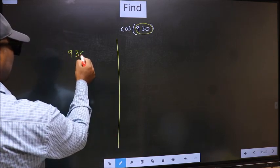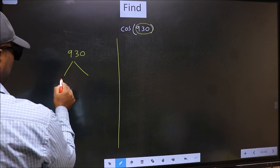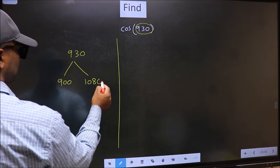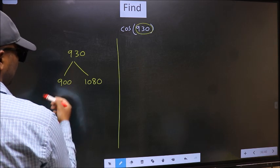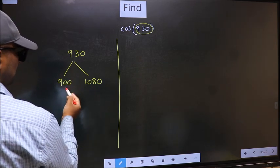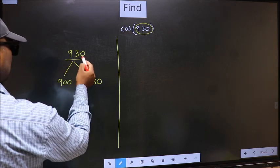930 lies between 900 and 1080. This is 180 into 5 and this is 180 into 6. Between these two numbers, 930 lies.